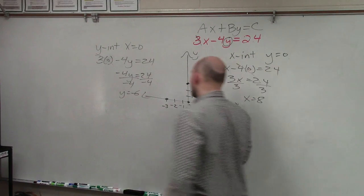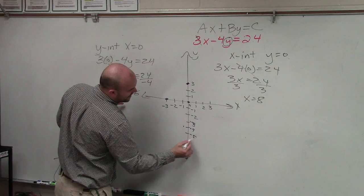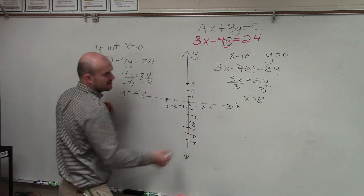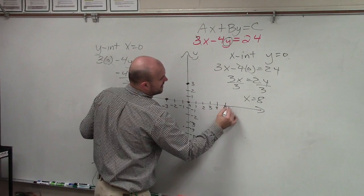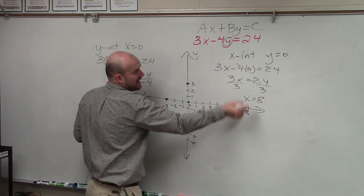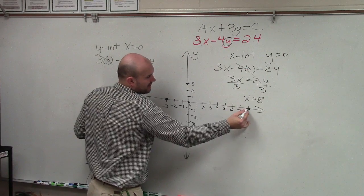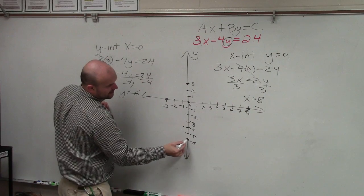So now I can just plot these two points. x negative 4, negative 5, negative 6, and 4, 5, 6, 7, 8. x equals 8, y equals 0, right here. y equals negative 6, x equals 0, right here.